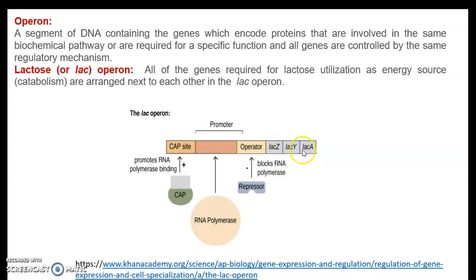The three genes involved in the lac operon are lacZ, lacY, and lacA. LacZ encodes the protein called beta-galactosidase, lacY encodes a protein called galactoside permease, and lacA encodes a protein called thiogalactoside transacetylase. These three enzymes are useful for the lactose utilization of the bacterial cell.